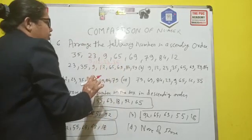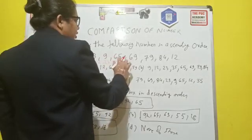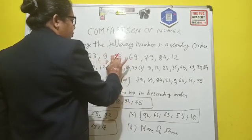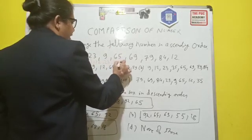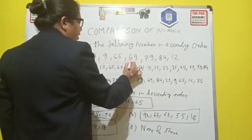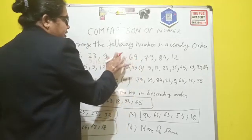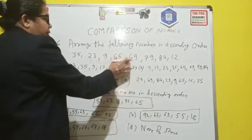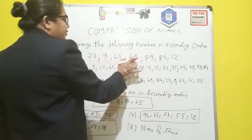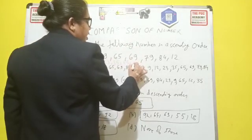Then coming to the next number out of that, so there is no 4, 5. So coming to the 6. So there is a 65. So write the 65. And there are 2 numbers, 65 and 69. So compare with the 1's position. So 5 and 9. So 5 will come first, and then 69.